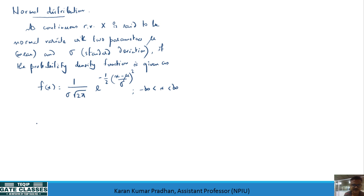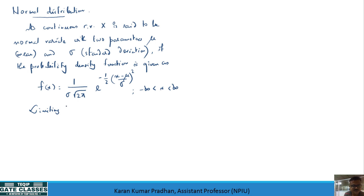The normal distribution is a limiting form of the binomial distribution, though this is beyond the scope of what is most useful for finding probability in the normal distribution. Just remember this fact.